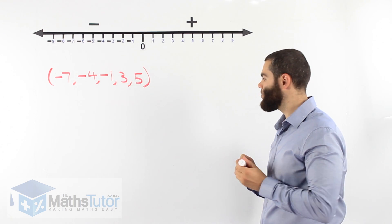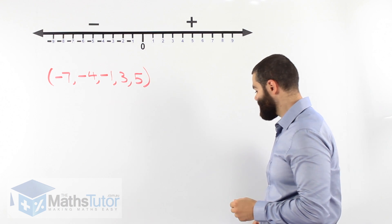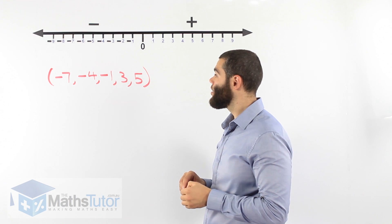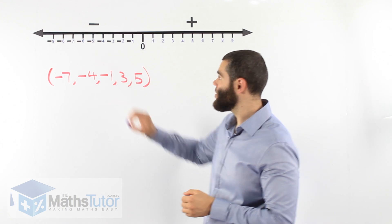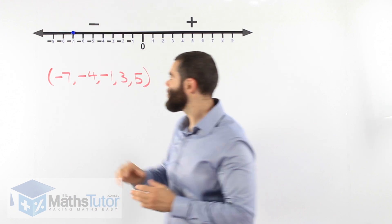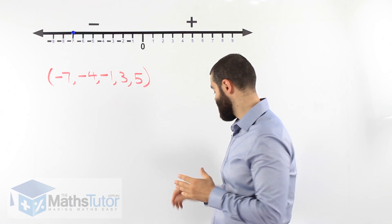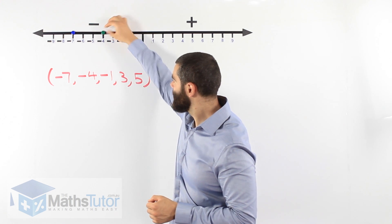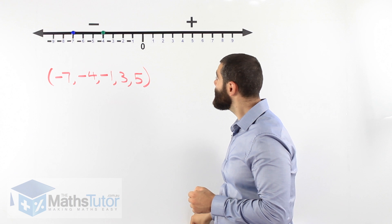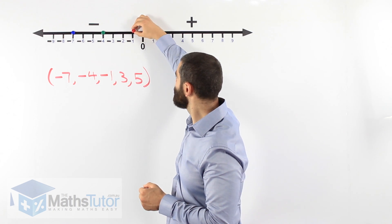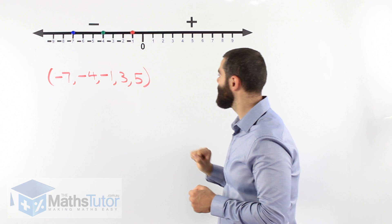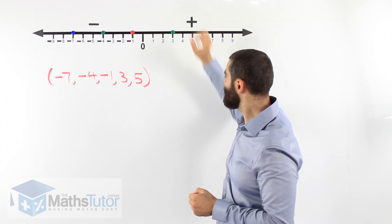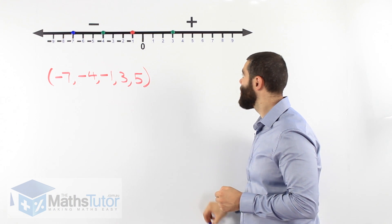So to plot these numbers on a number line we simply place a dot, a big dot on the number line. Here we have negative seven. We plot the point by putting a dot on the negative seven. On the negative four. There we go. On the negative one. There we go. On the three. And on the five.